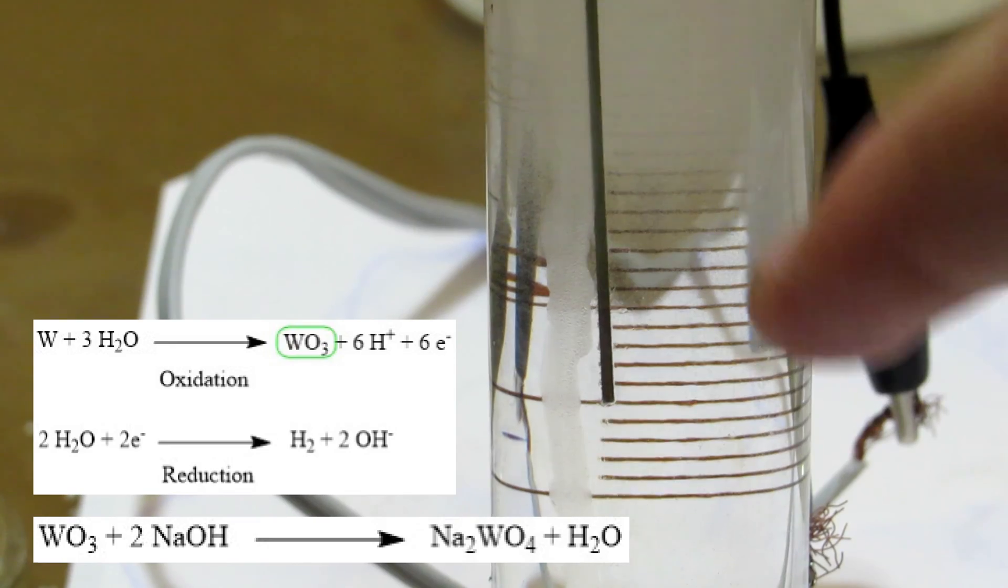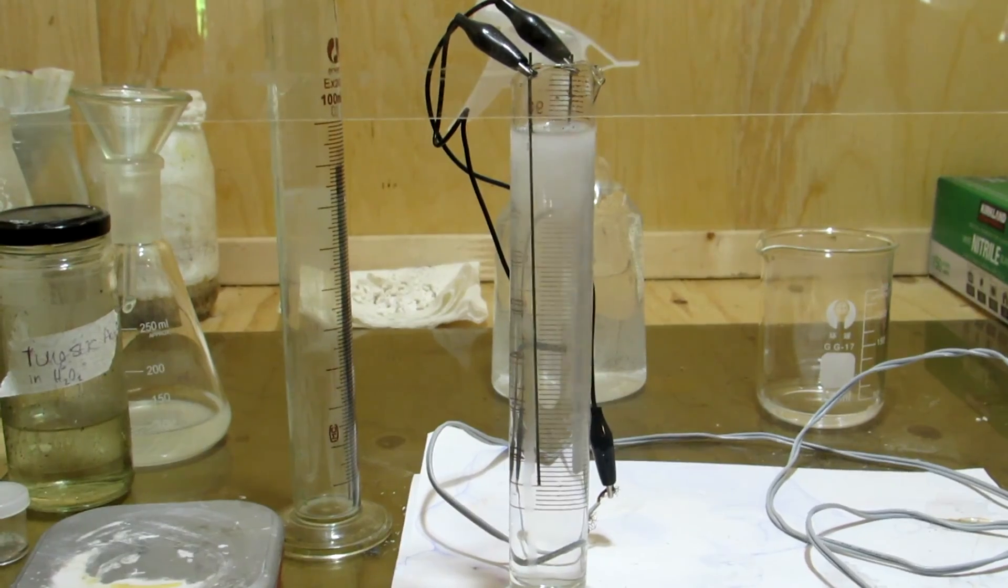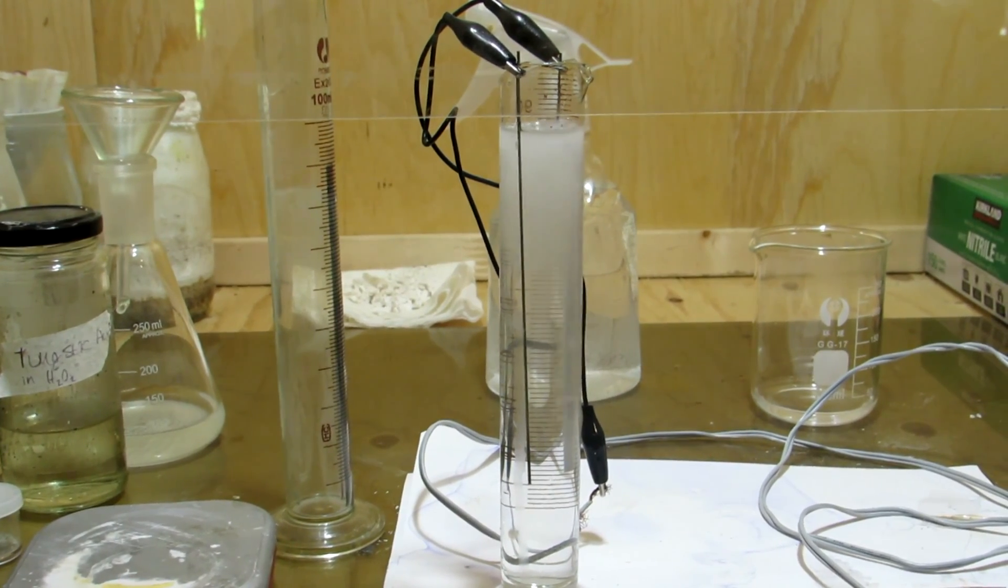As a note, only the positive electrode will dissolve, so a non-tungsten negative electrode can be used. As the rod dissolves, the thorium dioxide falls to the bottom and settles.